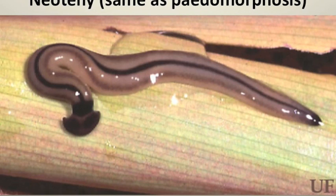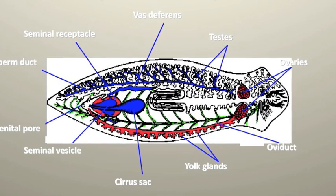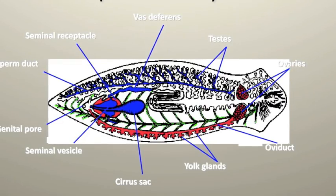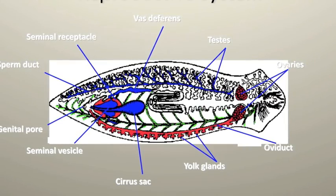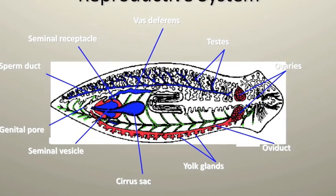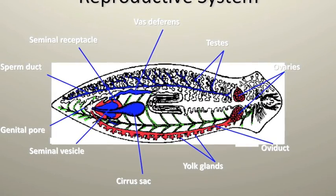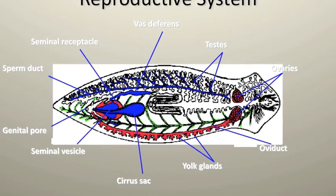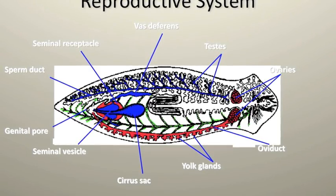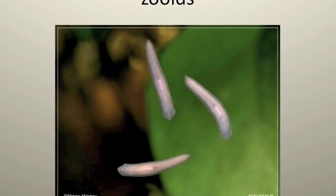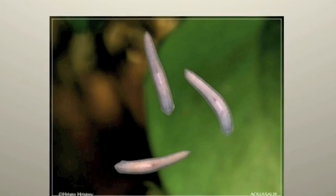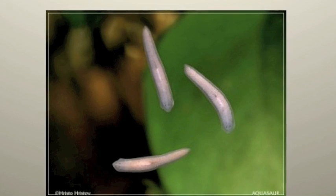At sexual maturity, the planaria is still considered to be in the larval form. The term for this is neoteny or paedomorphosis. This organism is hermaphroditic with a very complex reproductive system, though it is usually only male or only female at any given time. If the planaria is not ready to sexually reproduce, the organism simply splits in half into zoids. The zoids then use stem cells to grow their other body parts back, a process called regeneration.